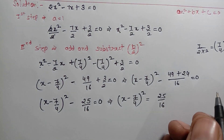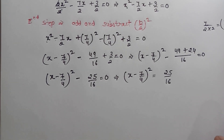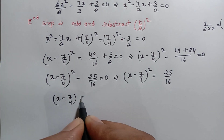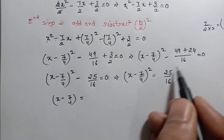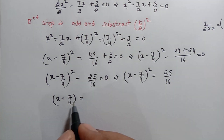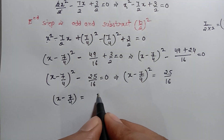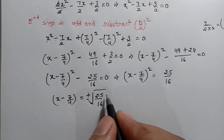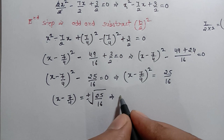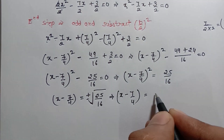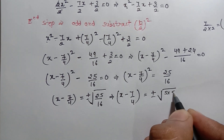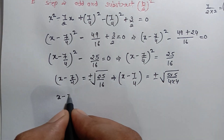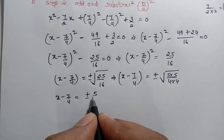अब हम square को another side पे send कर देंगे। जब भी square another side पे जाता है, तो plus minus के साथ under root देता है। x minus 7 by 4 equals to plus minus under root of 25 by 16। हम जानते हैं इसके factors: under root of 5 into 5 over 4 into 4, यानि plus minus 5 by 4।